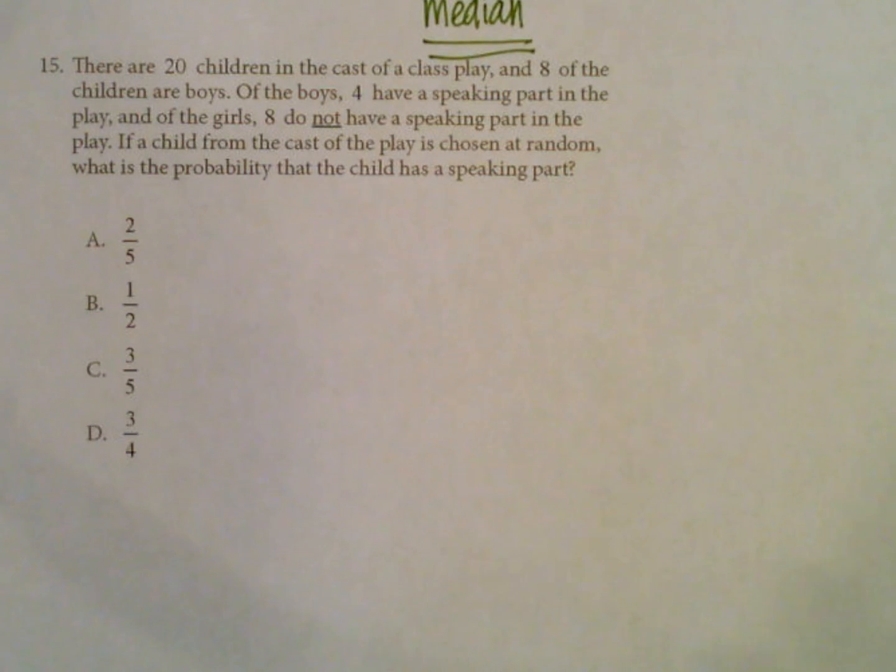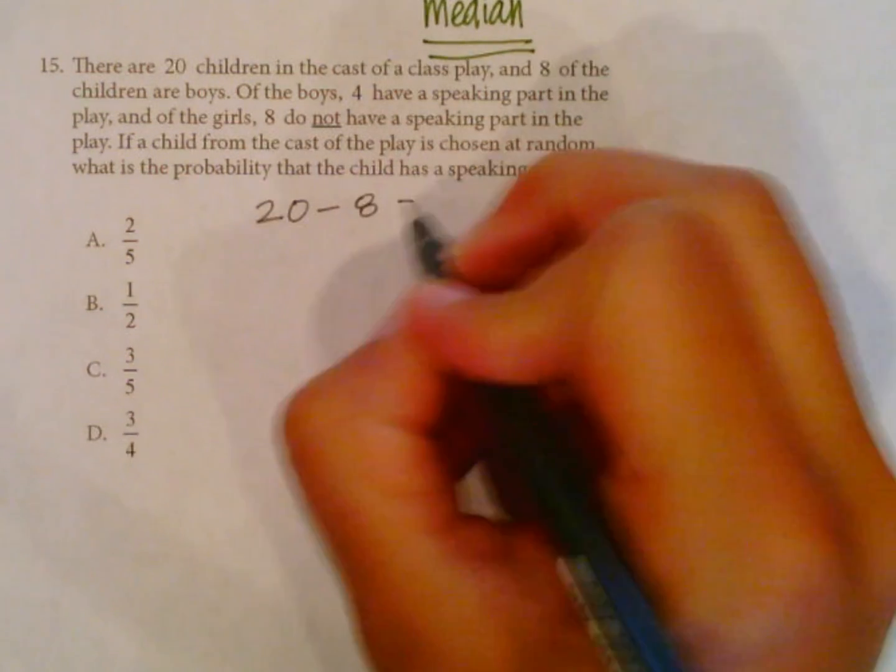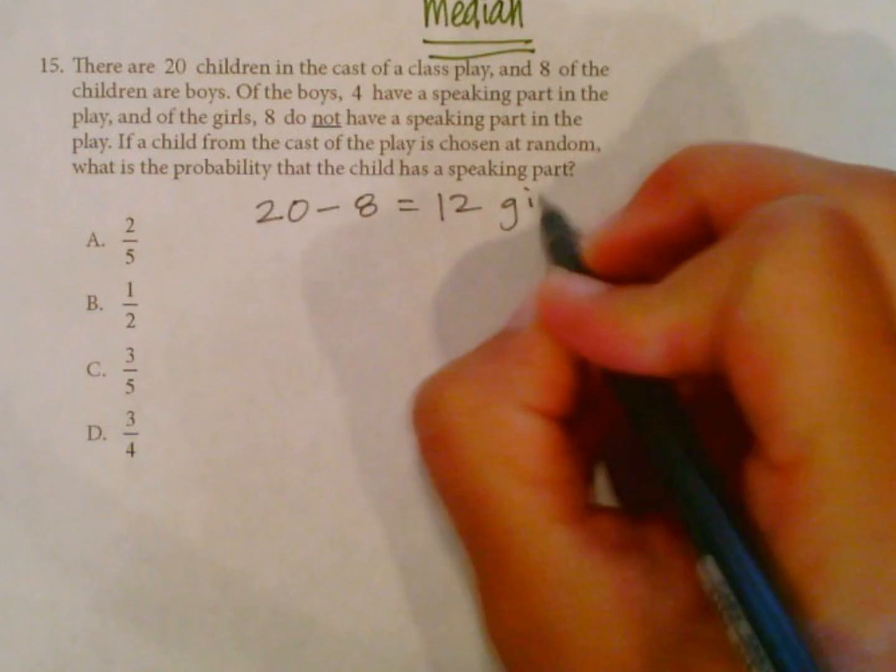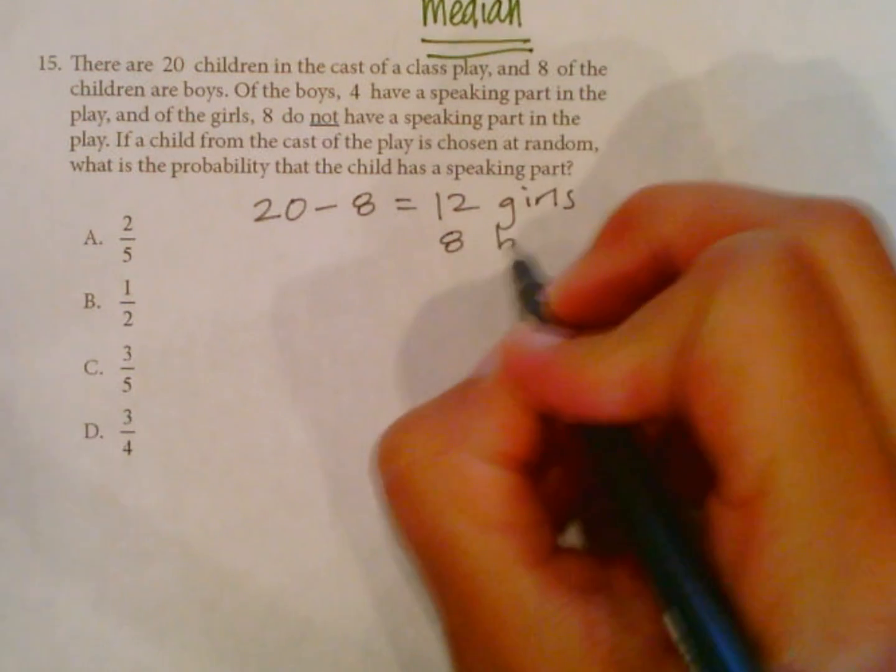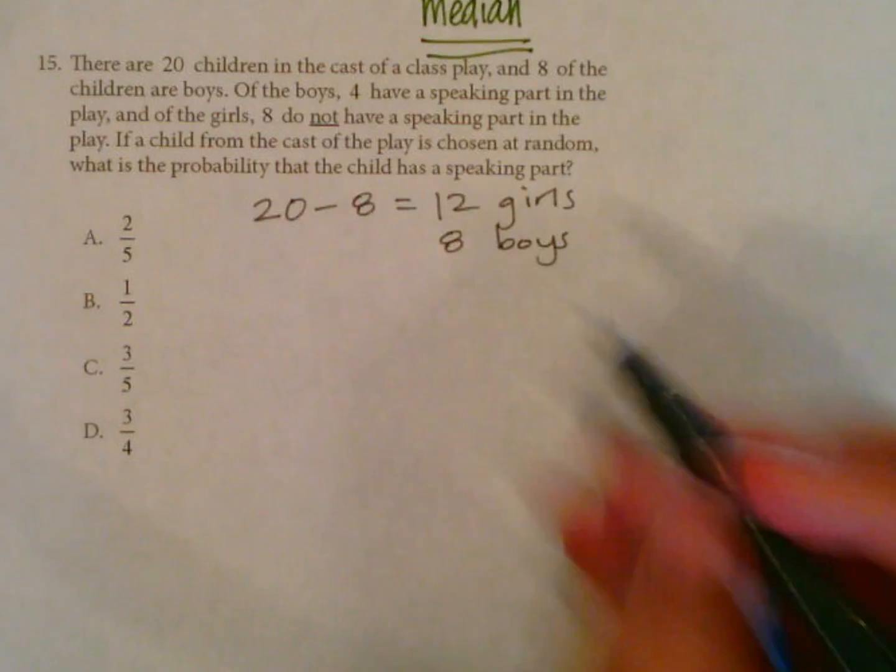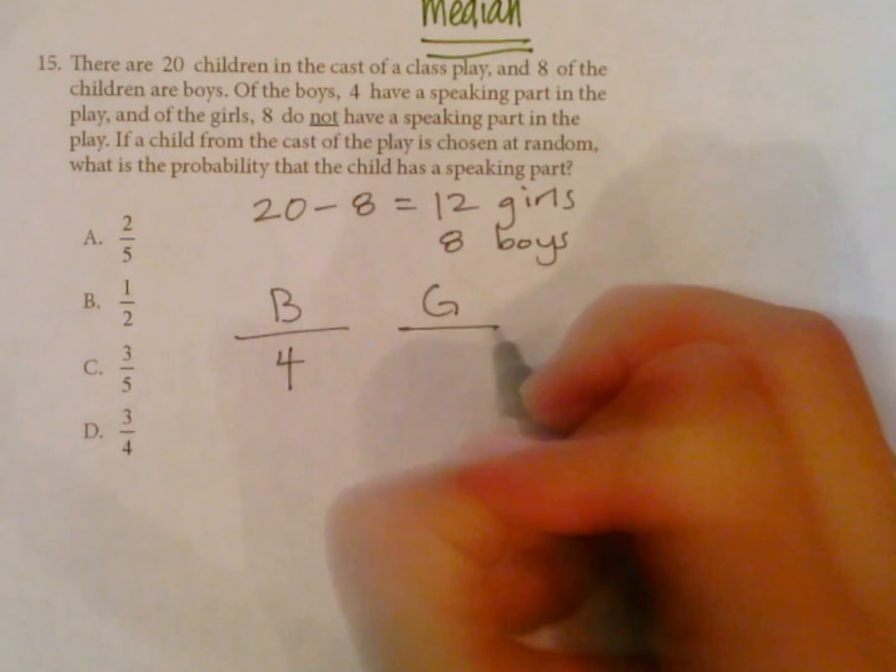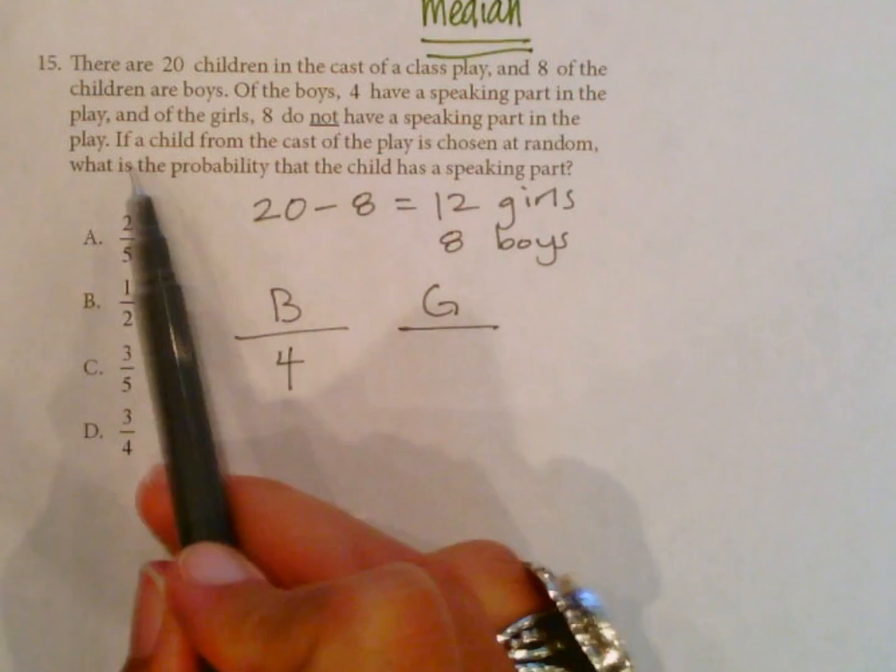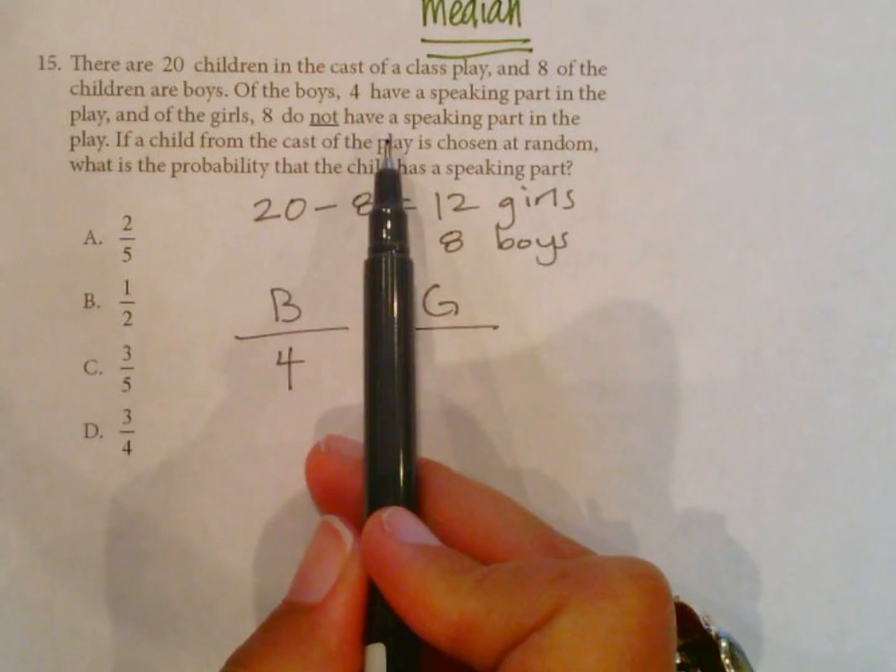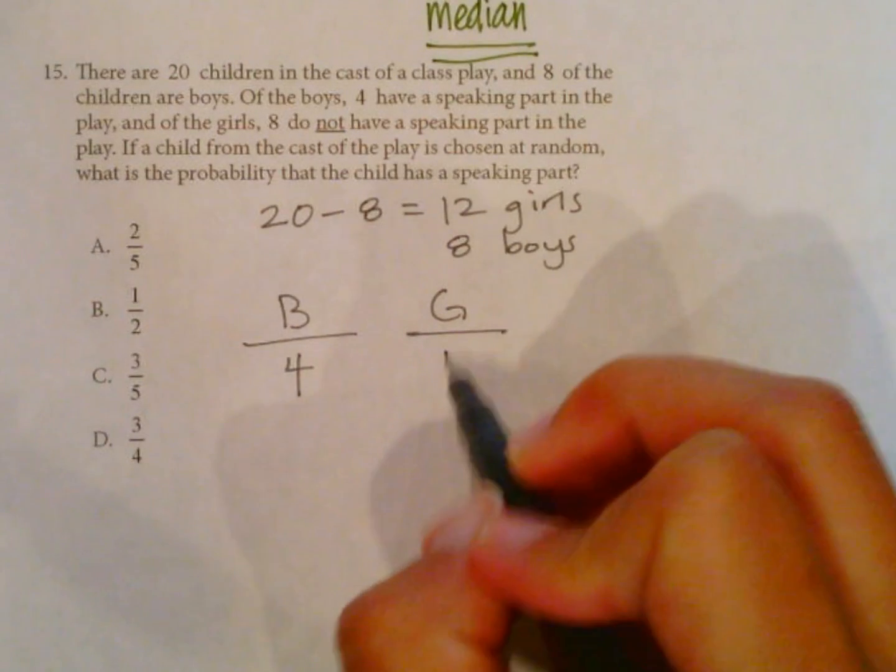Number 15: There are 20 children in the cast of a class play, and eight of the children are boys. So let's start with that: 20 minus eight boys is going to leave us with 12 girls. Eight boys, let's get our info. So of the boys, four have a speaking part. And of the girls, eight do not have a speaking part. So of the 12 girls, eight do not, which means that four do.